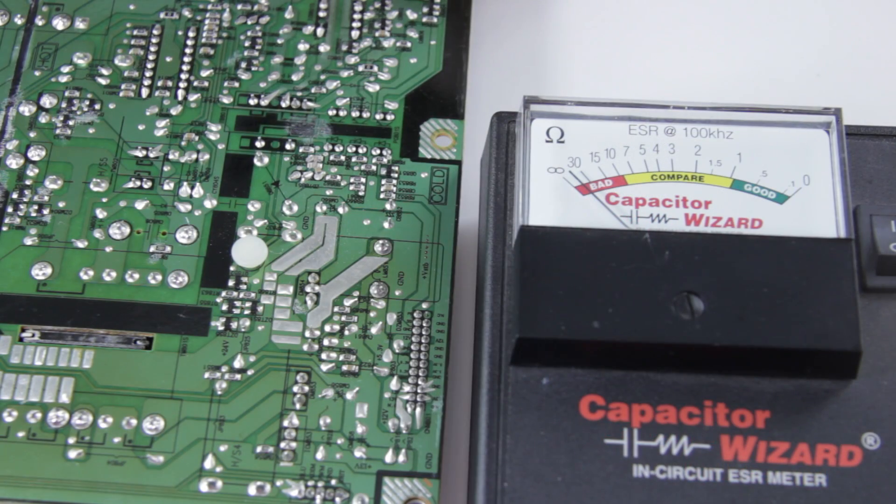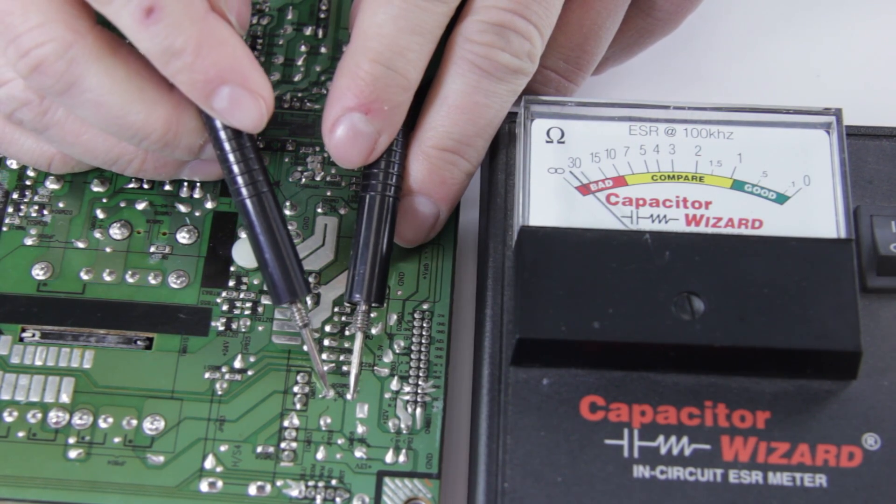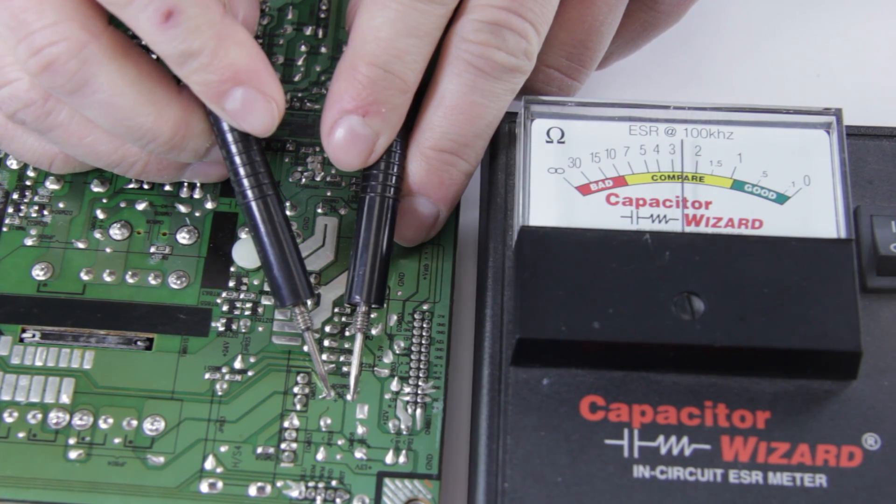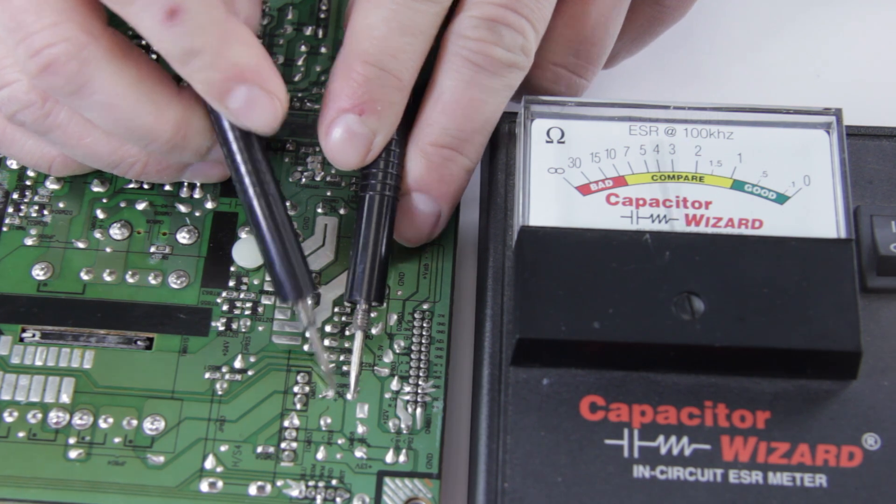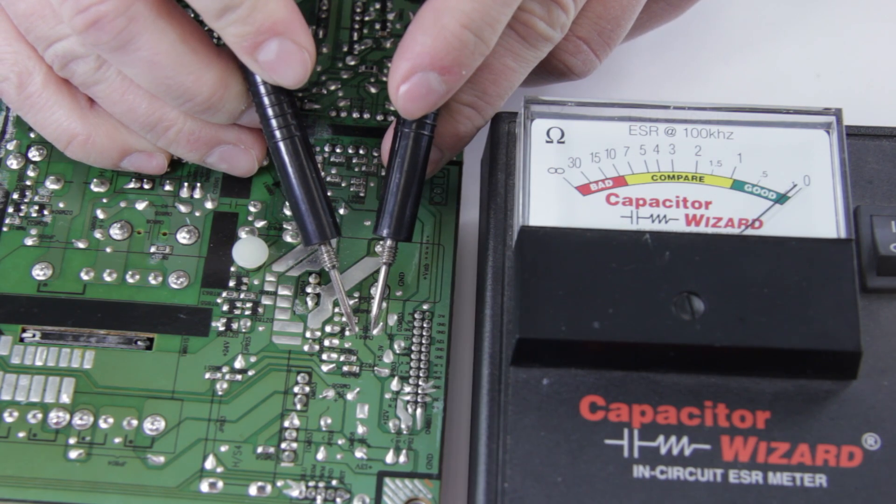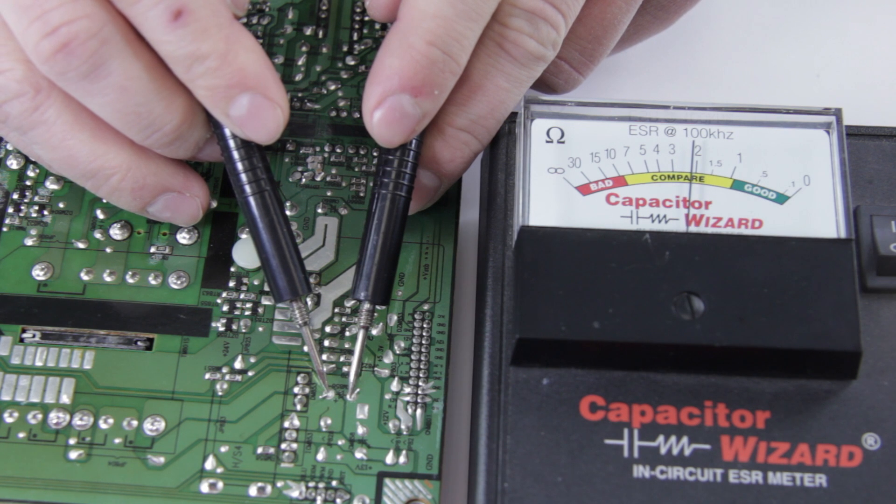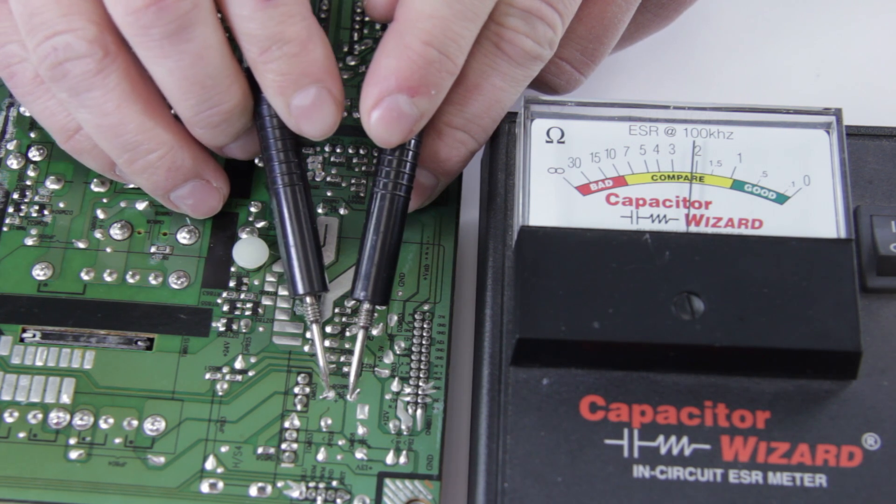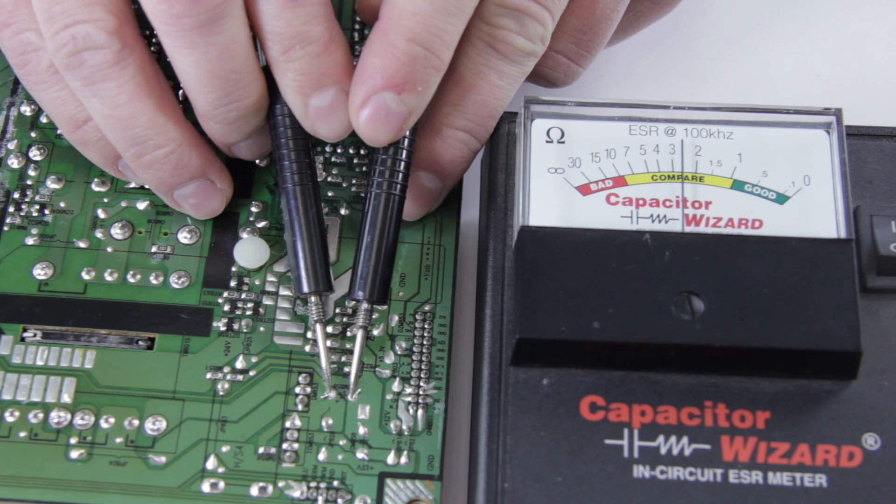So here we have a board and we can actually use the cap checker right on the board, and we're going to try this one. And then it comes up as compare. Well, we can look around the board and try different caps. Let's try this one right here. And that one's definitely good. So we can be pretty sure that this one is bad. And then we can pull the cap and check it using our regular multimeter and check the capacitance and replace it if it was defective.